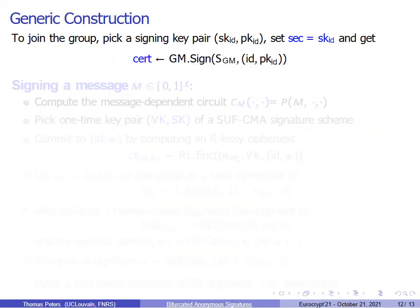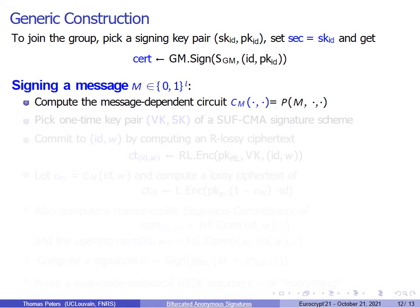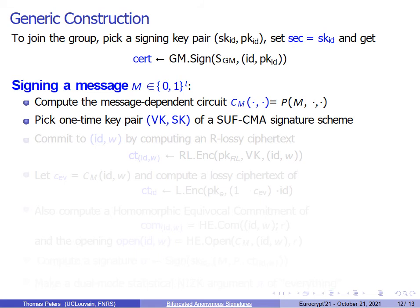Here is a quick overview of our generic construction. The join protocol works exactly as in many other schemes. A signer creates a signing key SKID and asks the group manager to sign the public verification key, so the certificate is the group manager's signature. To sign a message M, we first compute a message-dependent circuit. As in the signature, we also pick a pair of keys from a strongly unforgeable signature scheme, which we use at the end to sign all the computation for non-malleability — needed for CCA-like anonymity.